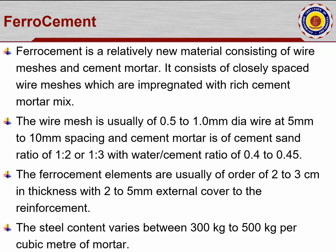The ferrocement elements are usually 2 to 3 centimeters in thickness with a 2 to 5 mm external cover to the reinforcement. Normally we adopt a cover size of 20 mm on the outer side, whereas here the cover is only 2 to 5 mm. The steel content varies between 300 kg to 500 kg per cubic meter of mortar, depending on the mortar mix ratio and strength factors.